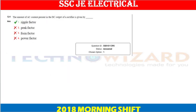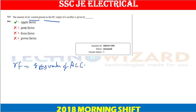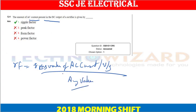Next question: the amount of AC content present in the DC output of a rectifier — AC content upon DC output — this is the ripple factor. The ripple factor is defined as the RMS value of AC current or voltage divided by the average value (DC output). Option A is the correct answer.